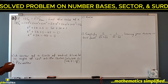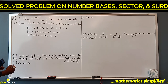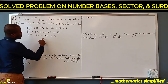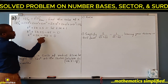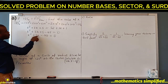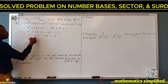We look for two numbers that multiply to give minus 40 and add to give 3. Those two numbers are 8 and minus 5, because 8 times minus 5 is minus 40 and 8 minus 5 is 3.